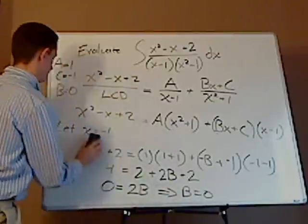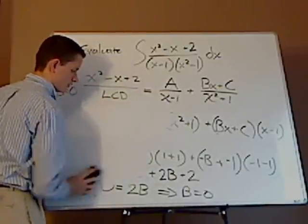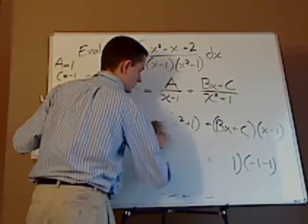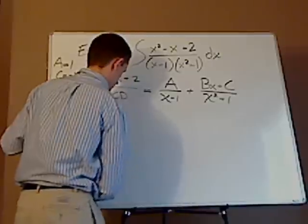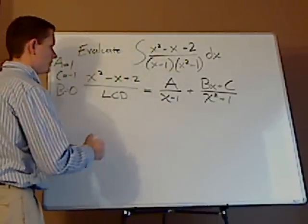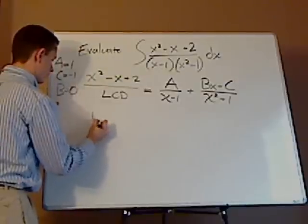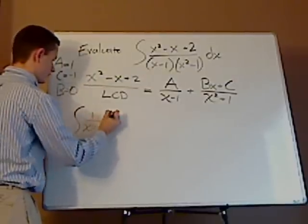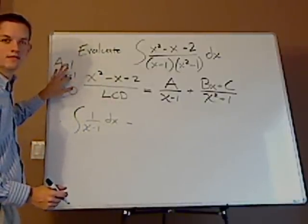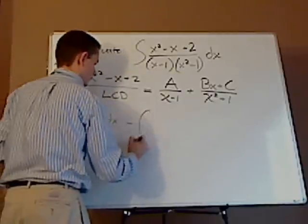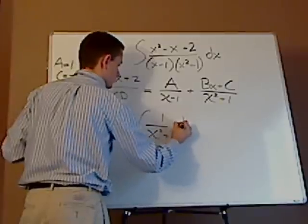I found all three of those. So what I can do now is just plug those in. And I'm basically going to split up these fractions. So this, a, is 1. So this is 1 over x minus 1 integral of dx minus. And it's going to be minus because I have that negative there, and the b cancels out. So I have 1 over x squared plus 1 dx.